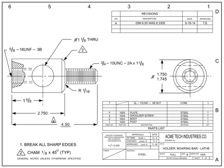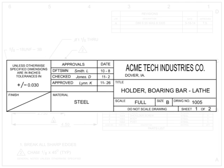The first place to look for information about a blueprint is on its title block. Most title blocks are located in the lower right-hand corner of the drawing. Although the title block information can vary by company, certain information is basic. The title block, at a minimum, contains a company's name and usually includes its logo and address.